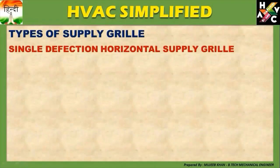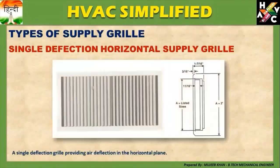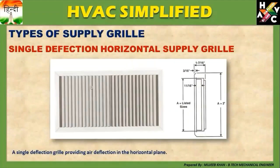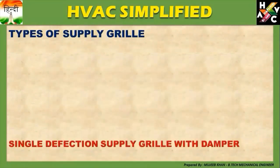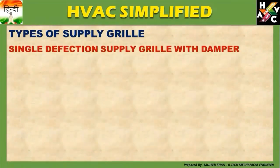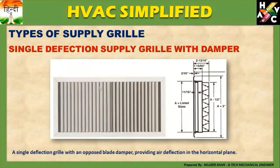Single Deflection Horizontal Supply Grill: A Single Deflection Grill provides a deflection in the horizontal plane। यह Supply Grill horizontal plane के लिए इस्तेमाल की जाती है। Single Deflection Supply Grill with Damper — यानि उसी Single Deflection Supply Grill को एक Opposed Blade Damper से Connect करते हैं। यह भी दो प्रकार में आती है — Without Damper और With Damper।